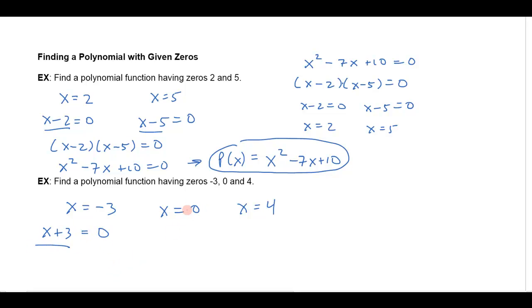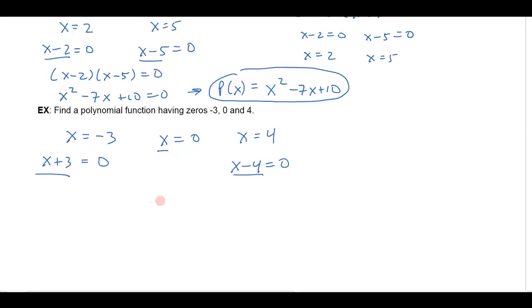Now this one here already has 0, so that just means that x has to be the factor, and if I bring the 4 over here, that means that x minus 4 is a factor. So I know my polynomial is going to have x as a factor, and x plus 3, and x minus 4.